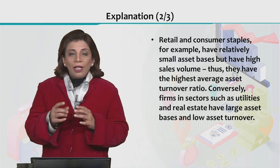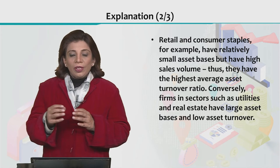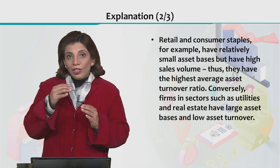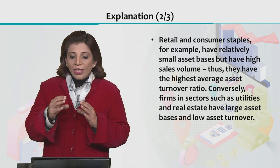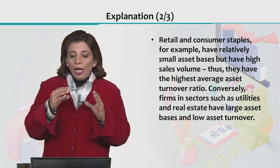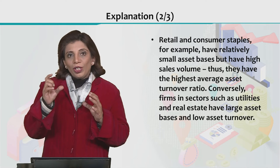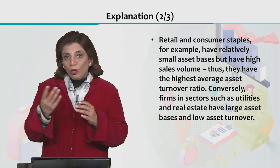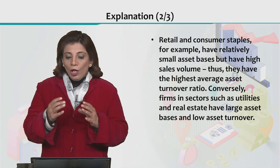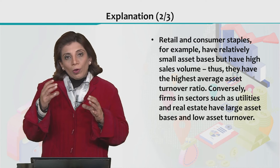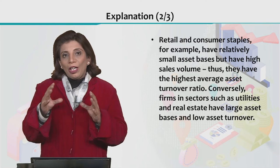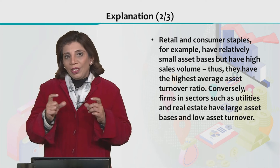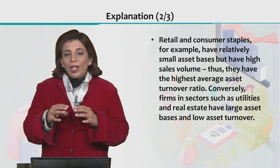Another important point is that retail or consumer staples companies have a relatively small asset base. When their sales volume is high but assets are small, the asset turnover ratio value is high. However, firms in sectors like real estate or utilities have large asset bases, resulting in a low asset turnover ratio value.